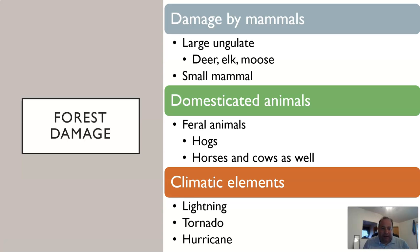Our last category of damage is forest damage by animals. Large mammals — deer, elk, moose, bears — can cause damage, as can small mammals. Domesticated and feral animals also cause damage. Feral animals are animals once domesticated but now living in the wild. There's a big problem with feral hogs throughout Texas, the southeast, and other places — they reproduce in great numbers and tear up areas, causing huge problems.